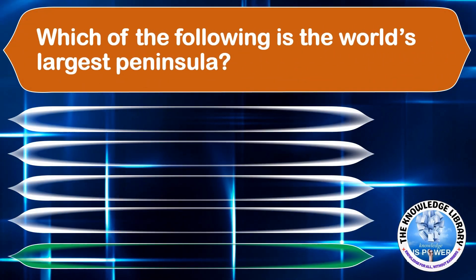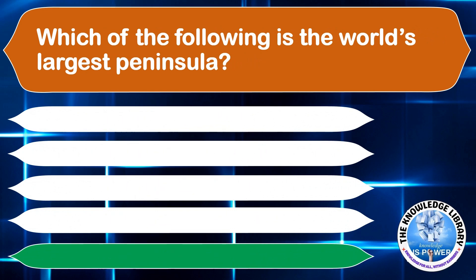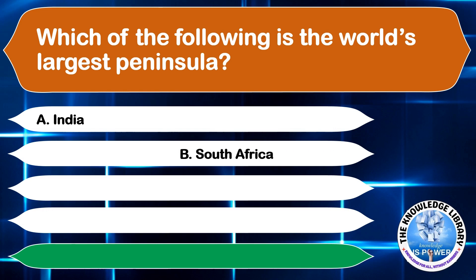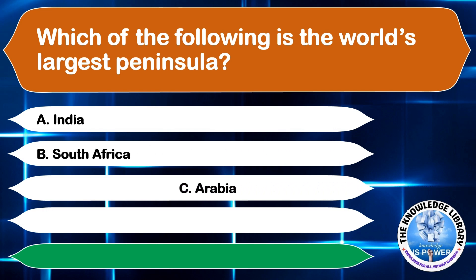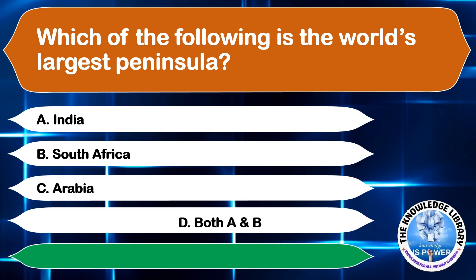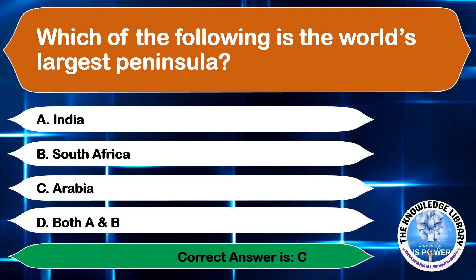Which of the following is the world's largest peninsula? A. India, B. South Africa, C. Arabia, or D. Both A and B. The correct answer is option C, Arabia.